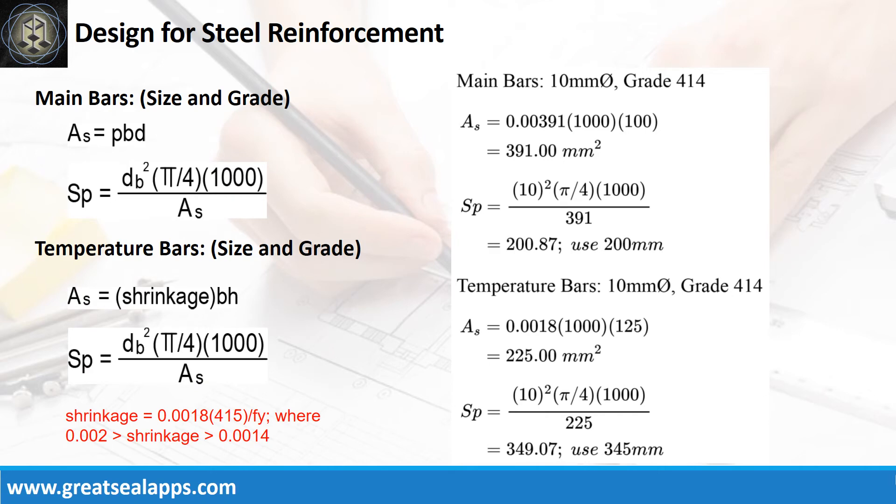Given Rho equals 0.00391, B equals 1000 mm, and D equals 100 mm, the area of steel for main bars is 391 square millimeters, and the spacing for 10 mm bar is 200 mm. The area of steel for temperature bars is 225 square millimeters, and the spacing for 10 mm bar is 345 millimeters.